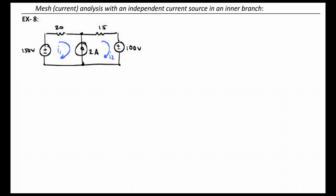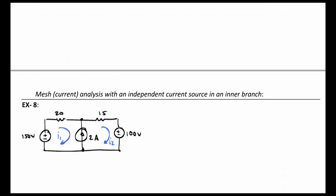We've arrived at our final example here. This is the last circuit dealing with mesh analysis, and here we have taken the current source that was formerly out here at the 150 volt position and instead moved it to an inside branch.